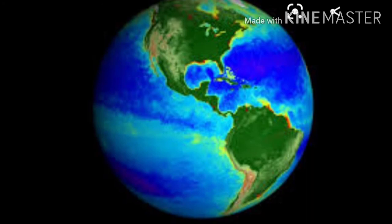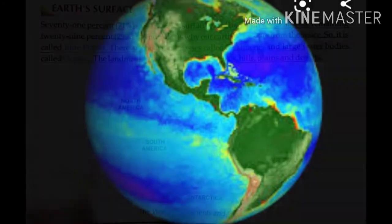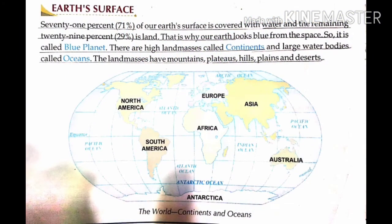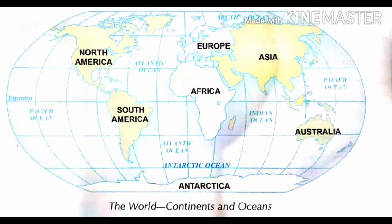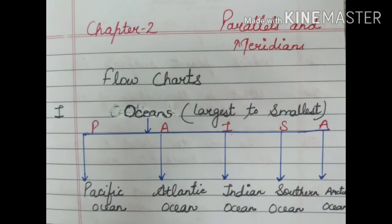The remaining 29% is the area where people live. Now we will learn two terms: oceans and continents. Large water bodies are called oceans and large land masses which are separate from other land masses are called continents. The blue part shown in the map represents the ocean, and the rest — North America, South America, Africa, Europe, Asia, etc. — these are all the continents.